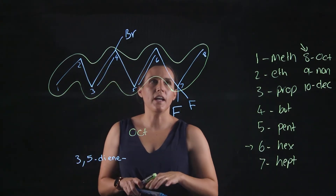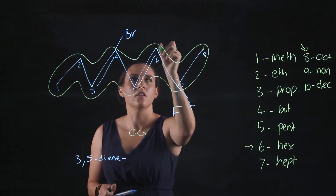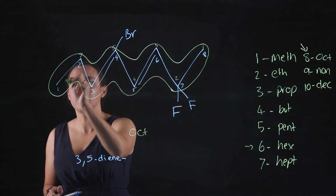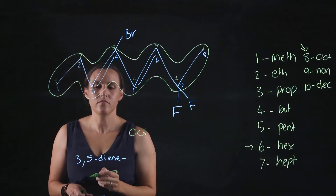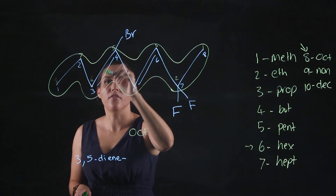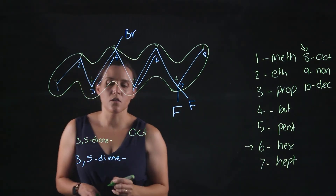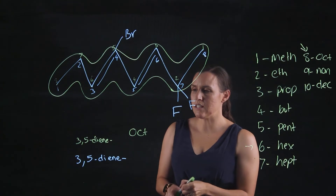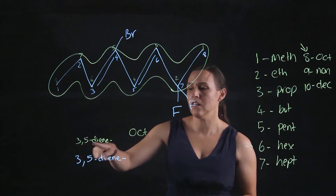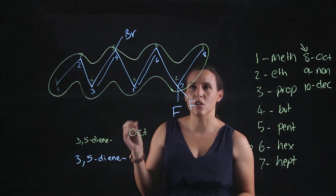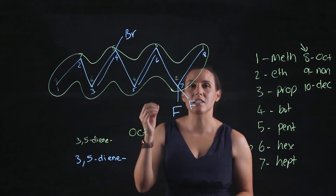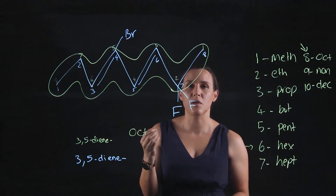If I number the other way — one, two, three, four, five, six, seven, eight — I also get the smallest numbers as a 3,5-diene. So numbering from left to right or right to left, I'm still getting a 3,5-diene. It doesn't matter in terms of the double bond, so now I want to look at the substituents coming off. The sum of the substituents needs to be the lowest possible number.